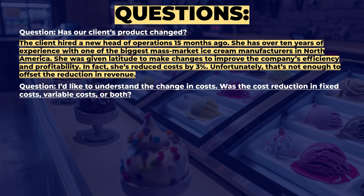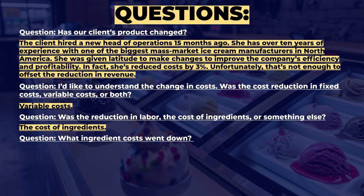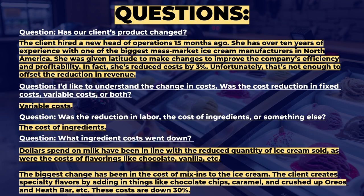Let's understand the change in costs. Was the cost reduction in fixed costs, variable costs, or both? Variable costs. Was the reduction in labor, ingredients, or something else? The cost of ingredients. What ingredient costs went down? Dollars spent on milk were in line with the reduction in quantity sold, as were flavorings like chocolate and vanilla. The biggest change was in the cost of mix-ins — specialty ingredients like chocolate chips, caramel, crushed Oreos, and Heath bars. Those costs are down 30%.